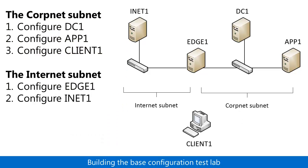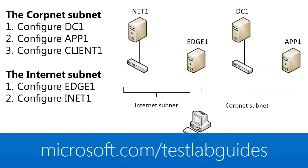Now you have both subnets, and the Client1 computer can move between them, simulating a roaming laptop or notebook computer. Snapshot these computers so that you can always return to this initial configuration. Now you are ready to build additional TLGs that rely on the Base Configuration or experiment on your own. For additional information about TLGs for Microsoft products, see microsoft.com/testlabguides.